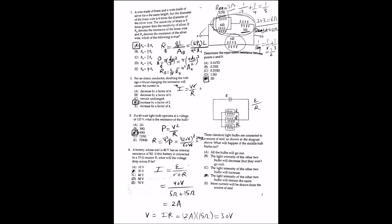For question 6, three identical light bulbs are connected to a source of EMF as shown in the diagram. If each bulb has resistance R, the current through each bulb equals E/R. If the middle bulb burns out, this current is unchanged because it is a parallel circuit. What does change is the total current provided by the battery. The light intensity of the other two bulbs remains the same, and the answer is D.